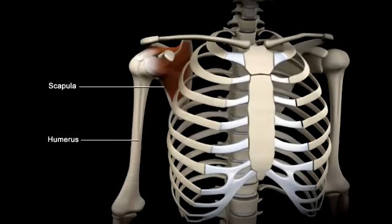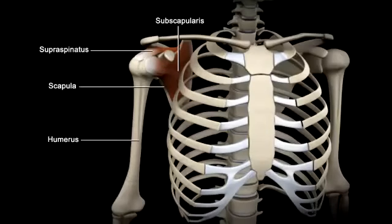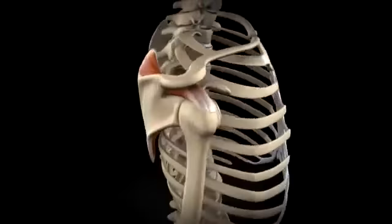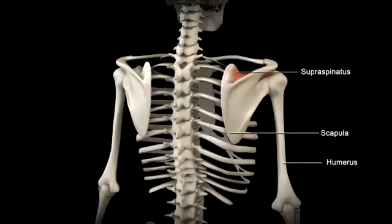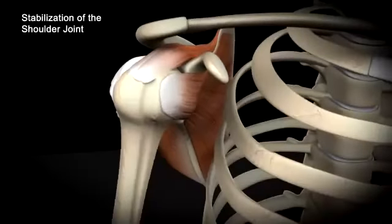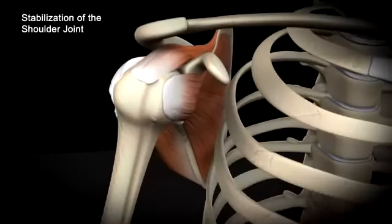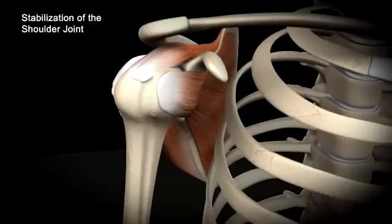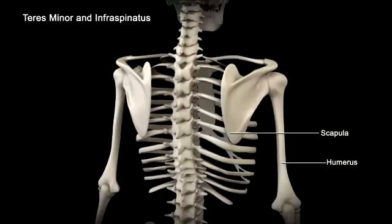Although the ligaments stabilize the shoulder joint a little, most of the strength in the joint comes from the rotator cuff muscles. These four deep muscles are the subscapularis, supraspinatus, teres minor, and infraspinatus. When all are activated at the same time, the rotator cuff muscles act to hold the head of the humerus in the glenoid cavity. Acting with more superficial muscles, the deeper muscles provide movements at the shoulder joint.